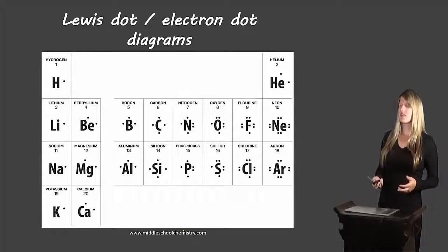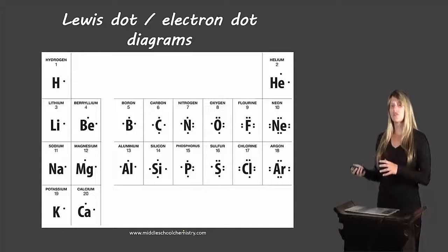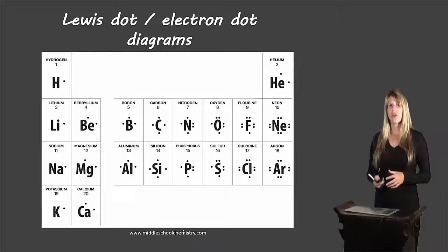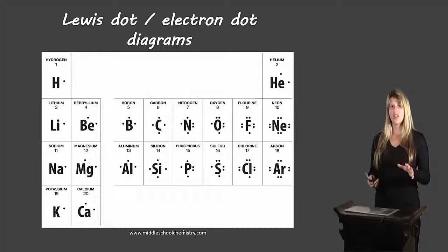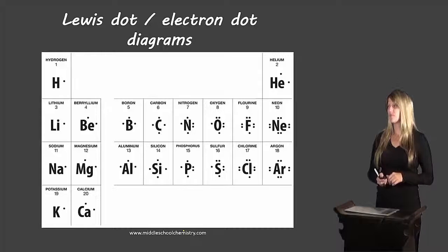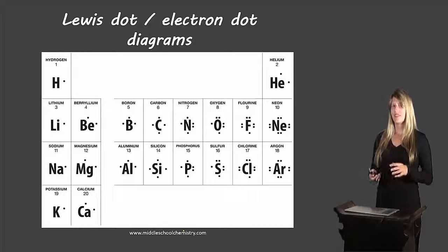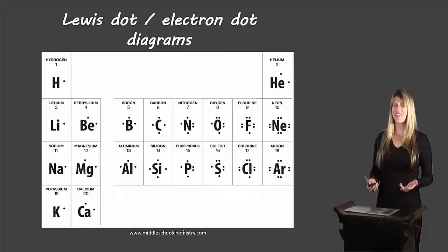Now let's take a look at Lewis dot diagrams. Here's a picture of the Lewis dot diagrams for the first 20 elements. I want you again to look for a pattern here. So pause the video and look for a pattern. See if you can find it. Did you find the pattern? I hope so.